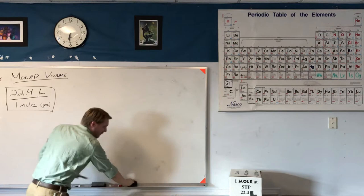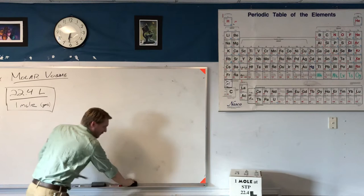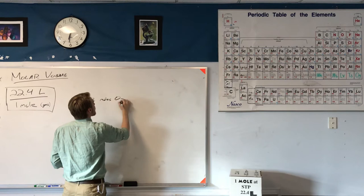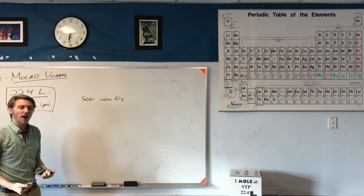If I had a different gas—and it doesn't matter—let's say it's oxygen gas. Let's say I've got 500 moles of oxygen gas, O2. I want to know how much volume that 500 moles of O2 takes up. Specifically, it's going to be at zero degrees Celsius, but we'll assume that always.